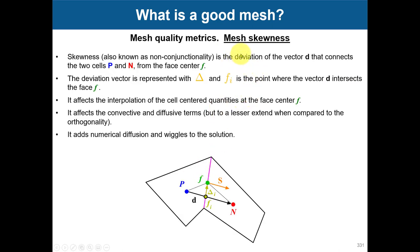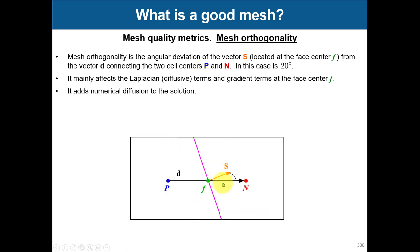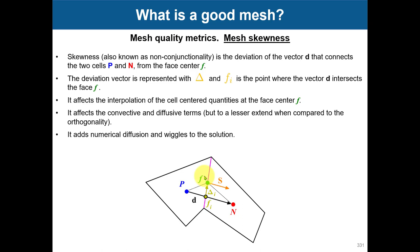Then we have mesh skewness. Skewness is the deviation of where the vector connecting cell centers P and N intersects the face from the actual face center. This affects interpolation of cell-centered quantities at face centers, and it impacts mainly convective and diffusive terms, adding numerical diffusion and wiggles to the solution. A single cell with large skewness can give you a lot of problems, just as a single cell with large non-orthogonality can.